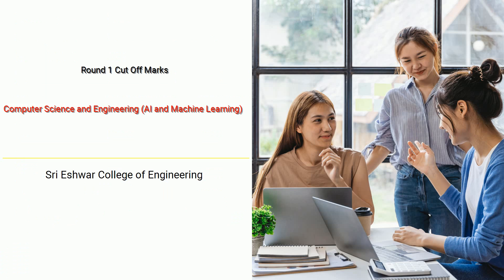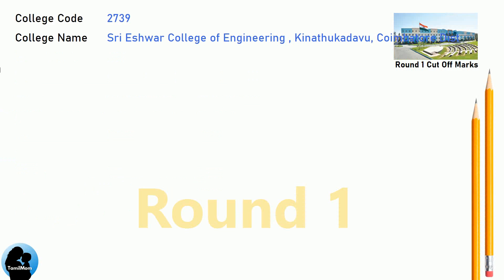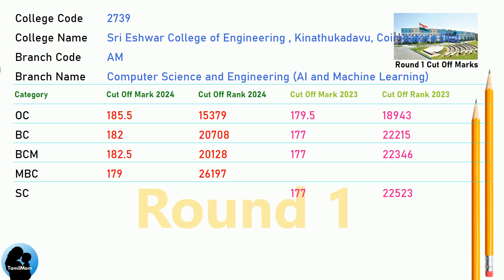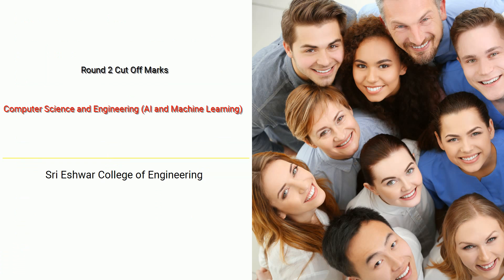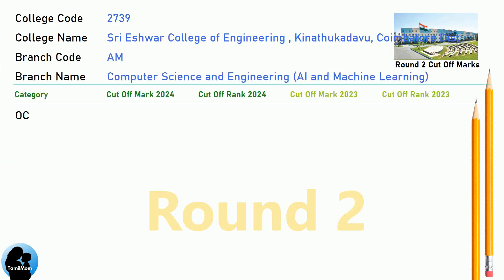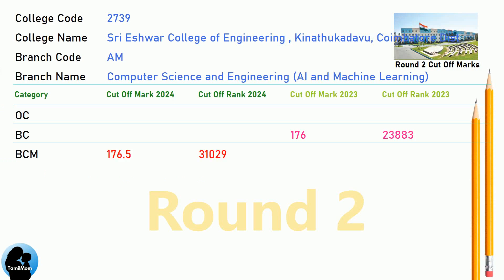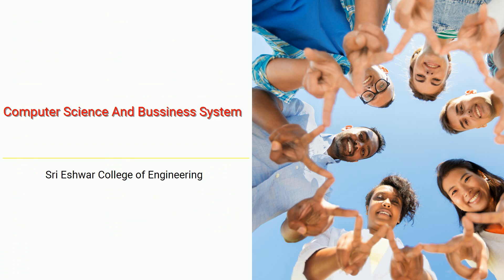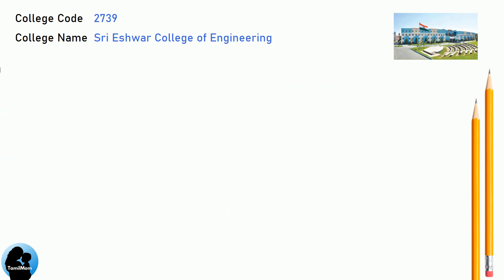DNA Round 1 Cut-Off for Shri Aishwara College of Engineering in Computer Science and Engineering, AI and Machine Learning. DNA Round 2 Cut-Off for Shri Aishwara College of Engineering in Computer Science and Engineering, AI and Machine Learning.